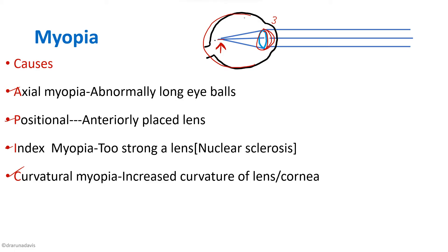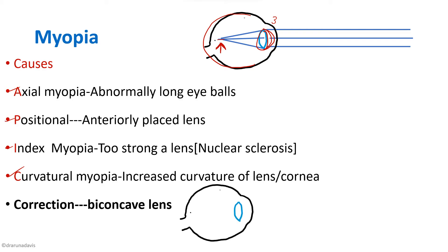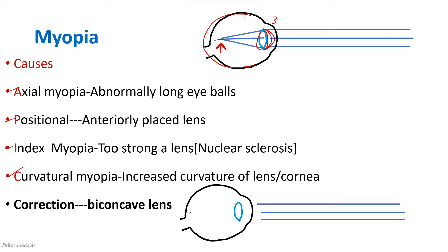To correct myopia, a biconcave lens is used. For a myopic eye, when rays from a far object reach the eye, placing a biconcave lens will converge those rays onto the retina itself. That is the correction of myopia.